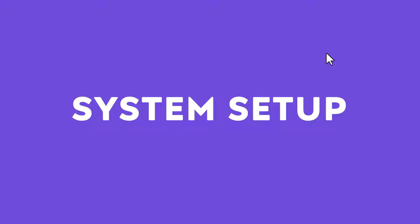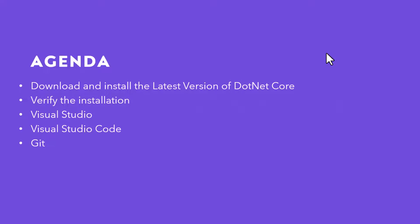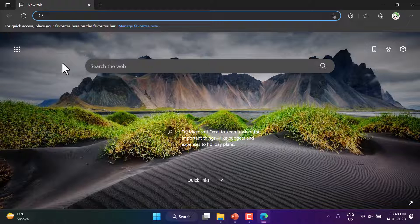In this video we will talk about how to set up our system for .NET development. We will install all the tools, software, and SDKs required to work with .NET or C#. Here is the quick agenda: first we will download and install the latest version of .NET Core, because in this course we will be working on the latest version of C# which is provided by .NET Core. Then we will verify the installation and install software like Visual Studio, Visual Studio Code, and Git.